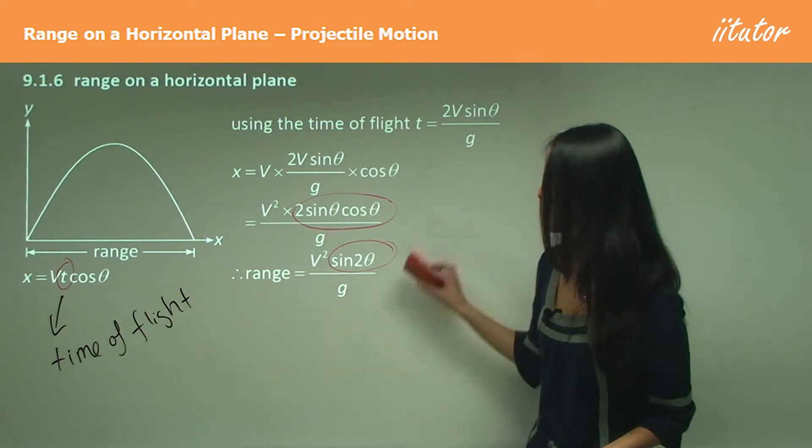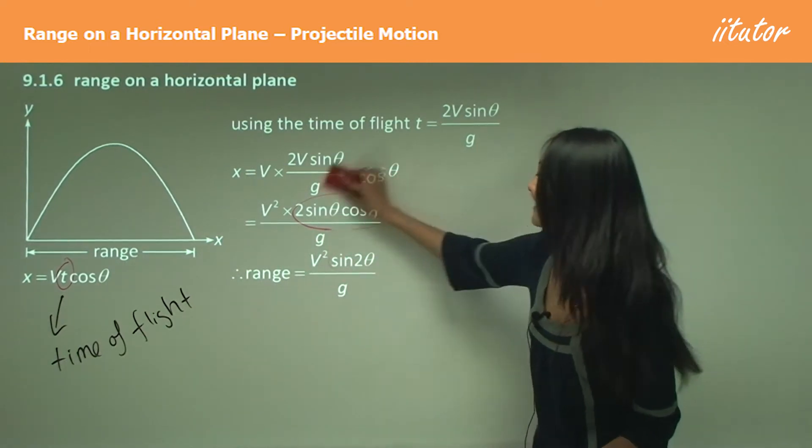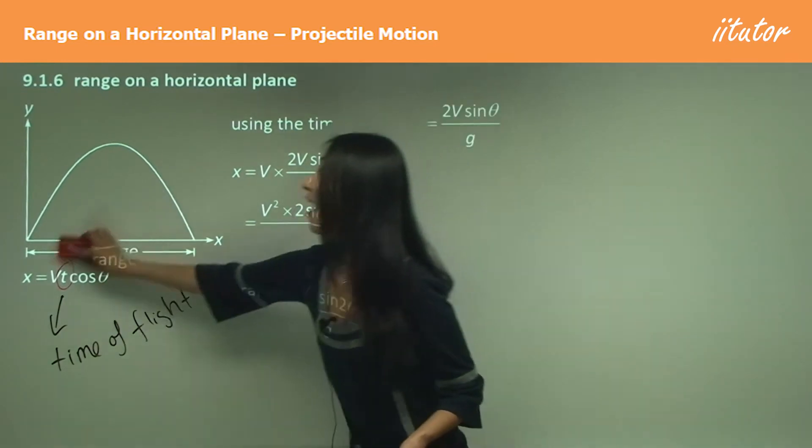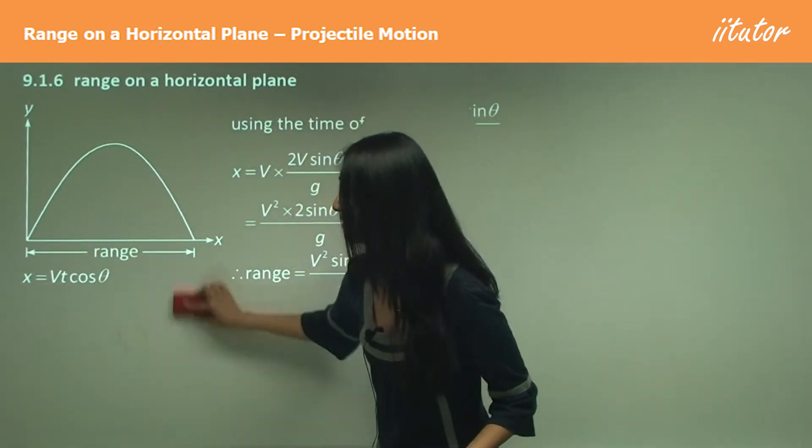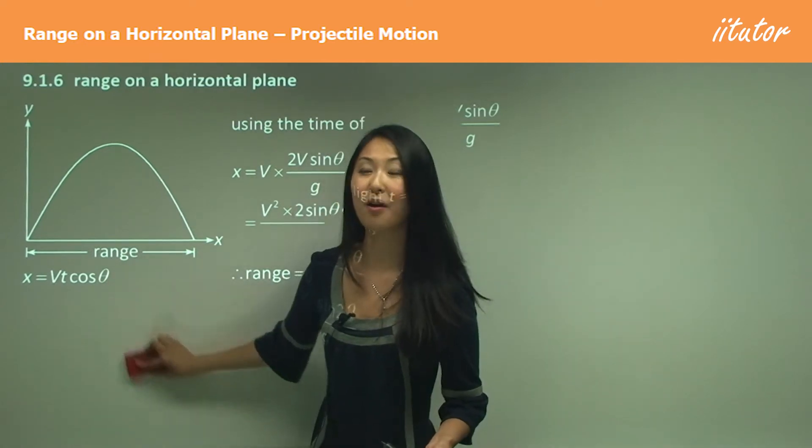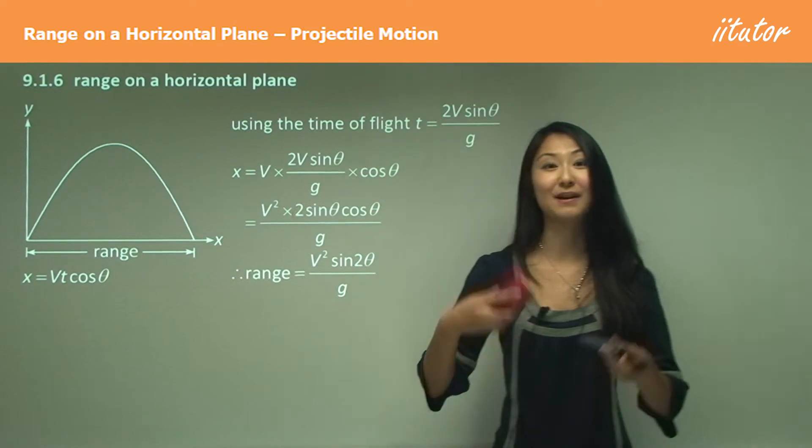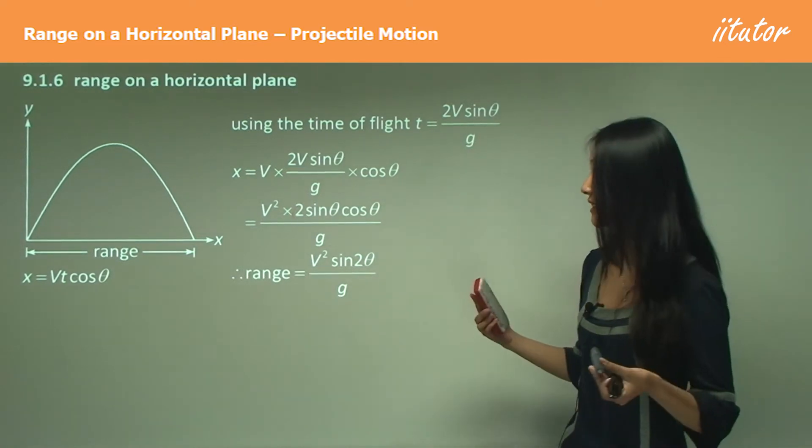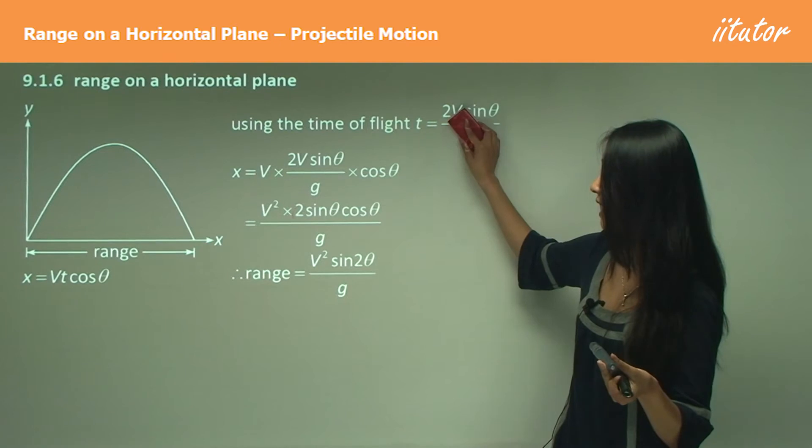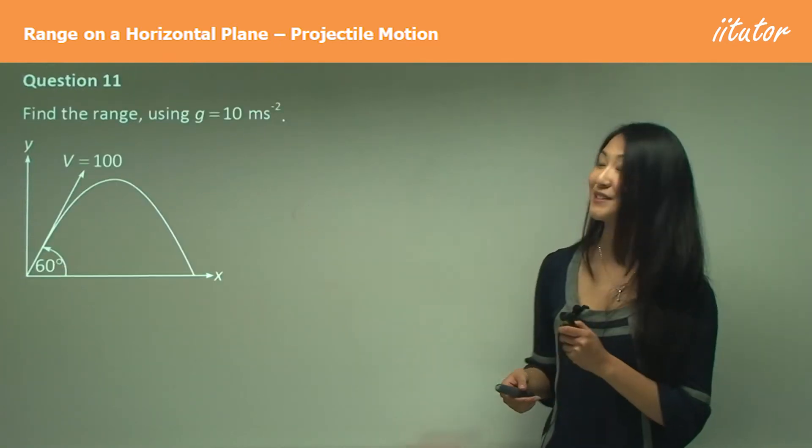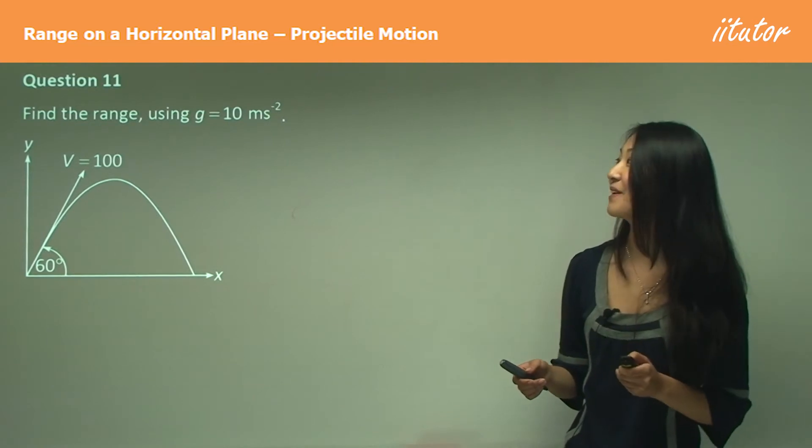I want to emphasize, don't want you to memorize this equation. What is important to know is our horizontal displacement given to us by VT cos theta, which means we need to sub in T, and that T is given to us by the time of flight. So all you need to do to work out that range is literally sub in time of flight into that T. Pretty simple? Good. That means we should be able to do question 11 without any problems.